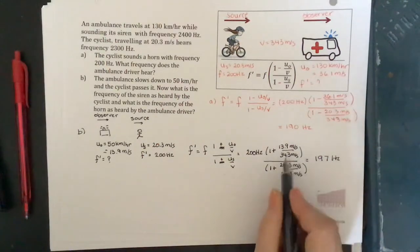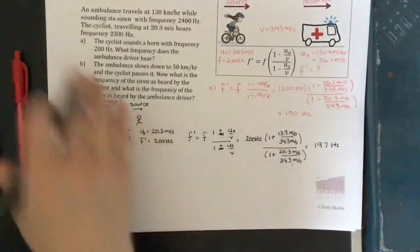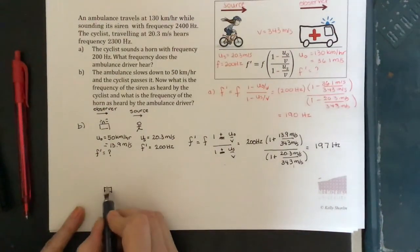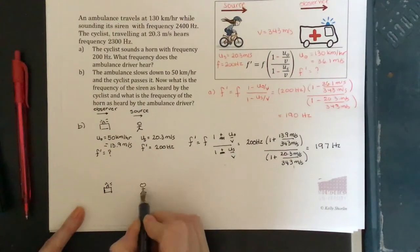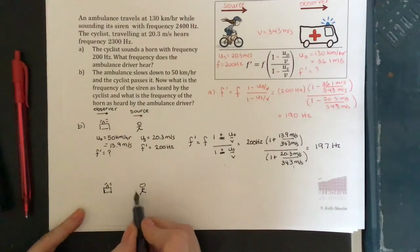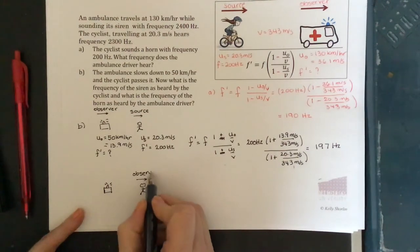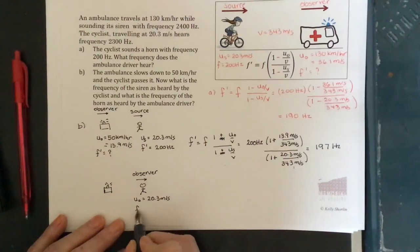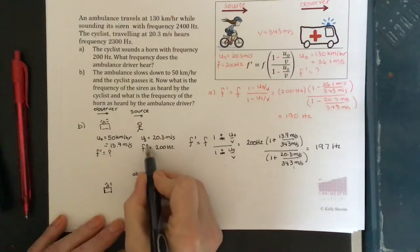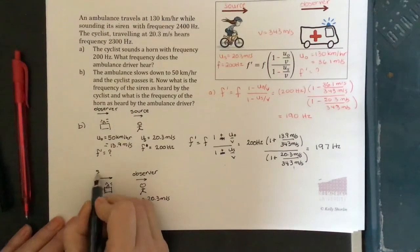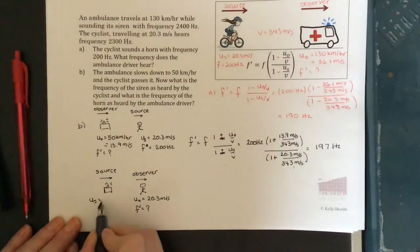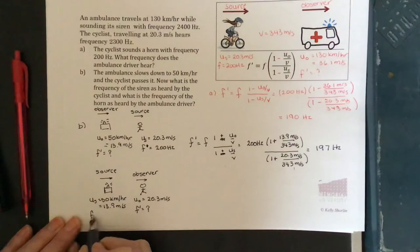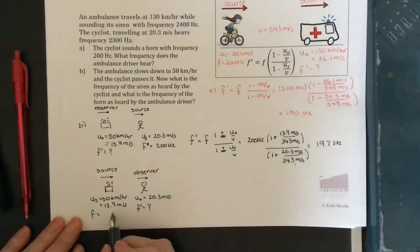That frequency of 197 hertz is pretty close to the original frequency of 200 hertz, which makes sense since they're traveling at close to the same speed. Now, keeping the same situation with the ambulance behind and the cyclist in front, we ask what the cyclist hears — making the cyclist the observer. The speed of the observer is 20.3 meters per second. The ambulance is the source, with a speed of 13.9 meters per second, and the ambulance siren frequency is 2400 hertz.